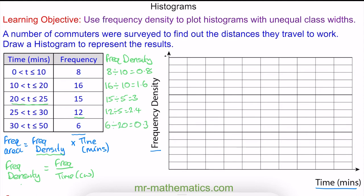We can see that our time scale goes from 0 to 50, which I can mark along the horizontal axis. I can mark off every 10 seconds. Our frequency density goes up to 3, so I can have 1, 2, and 3.